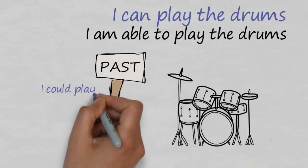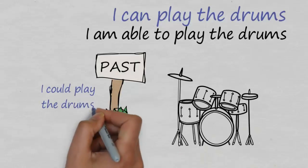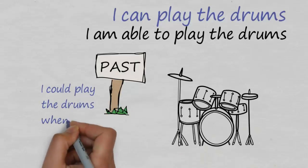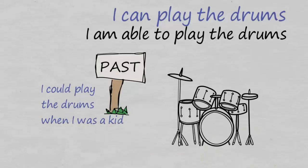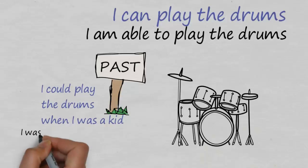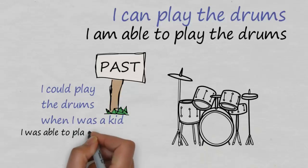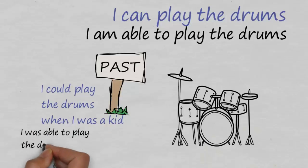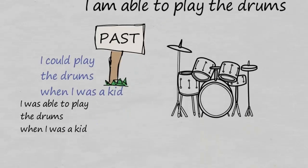However, when we switch to the past, both forms are again possible in the past simple. So: 'I could play the drums when I was a kid,' or 'I was able to play the drums when I was a kid.' Both work fine.